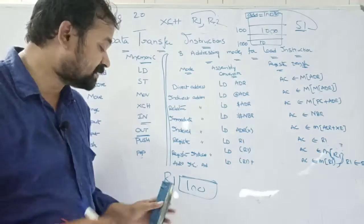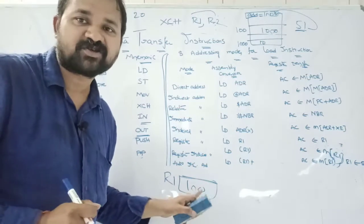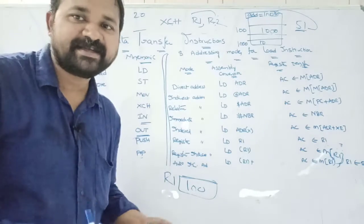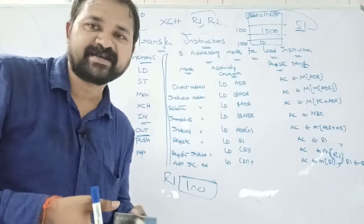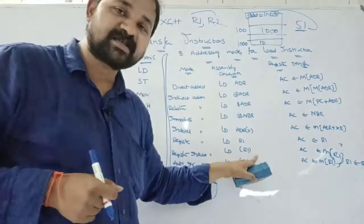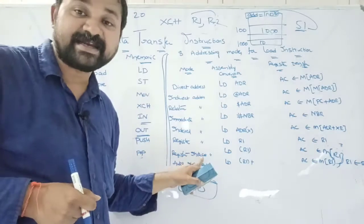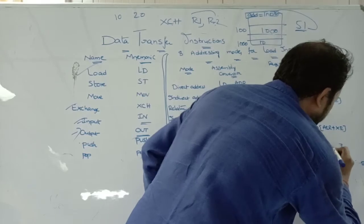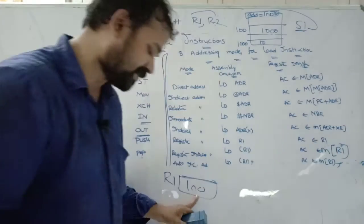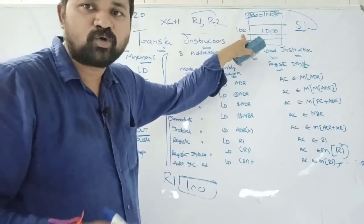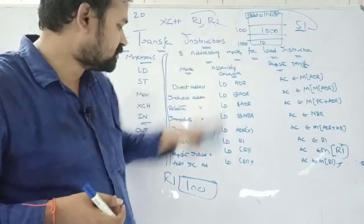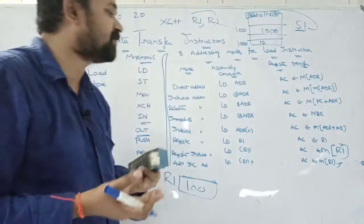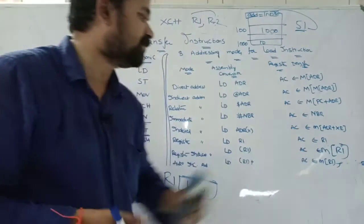Register indirect addressing mode means the register contains the effective address, and we go to that address to find the operand. It is represented using parentheses: 'LD (R1)'. In register transfer notation: 'AC ← M[R1]'. For example, if R1 = 100 and M[100] = 1000, then 1000 will be loaded into the accumulator.